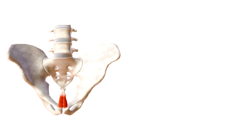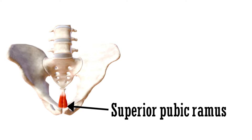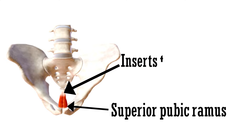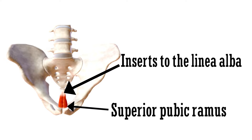As you can see, this is the point of origin — the superior pubic ramus — and this is the point of insertion to the linea alba. This muscle is the Pyramidalis.